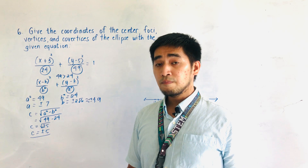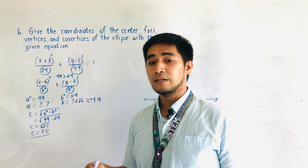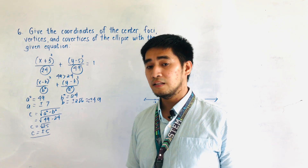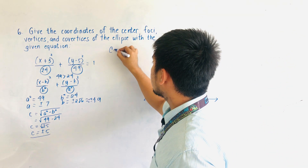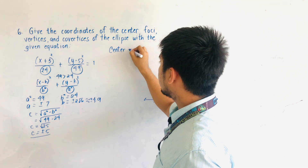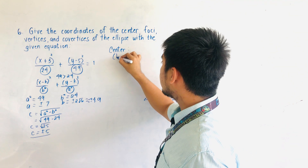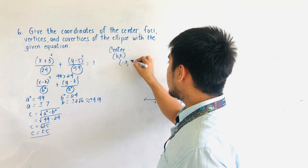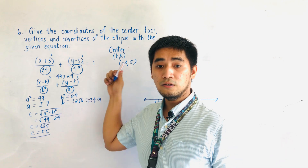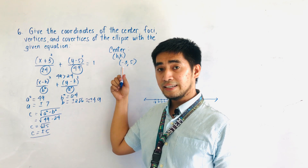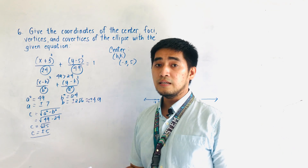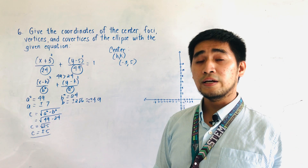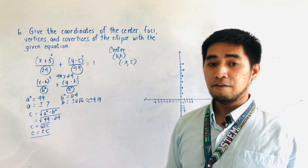We are now ready to gather the information needed to identify the center, the foci, the vertices, and the co-vertices. For the center, the center is located at (h, k). The center is at negative 3 and positive 5. Just look at the given equation and you will be ready to identify the center.